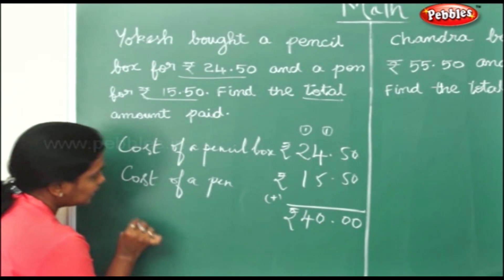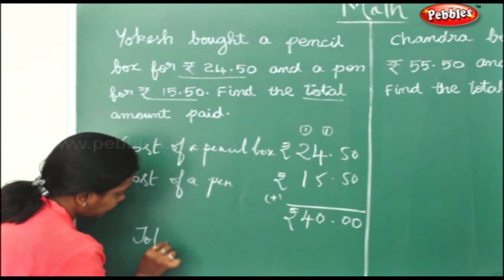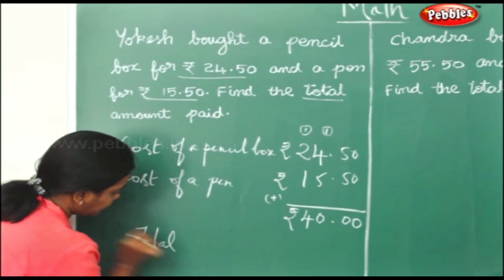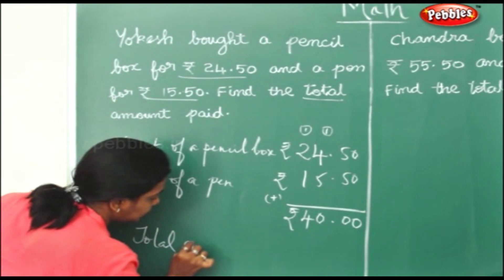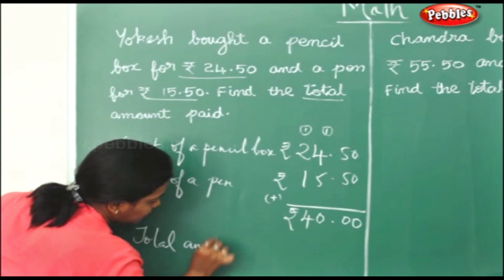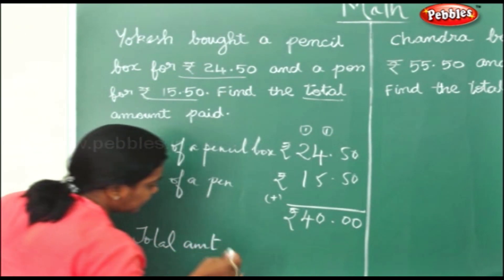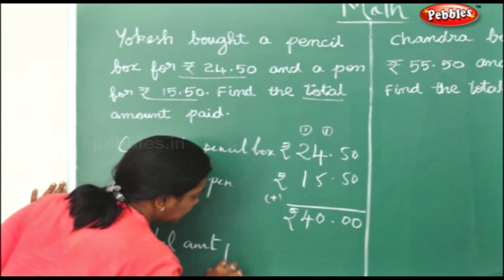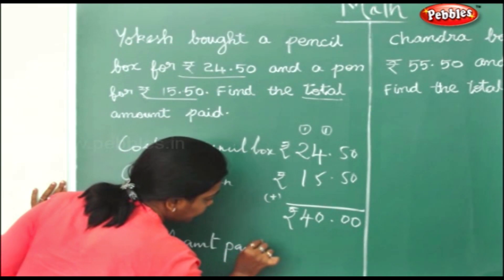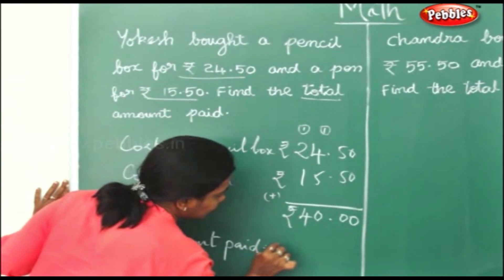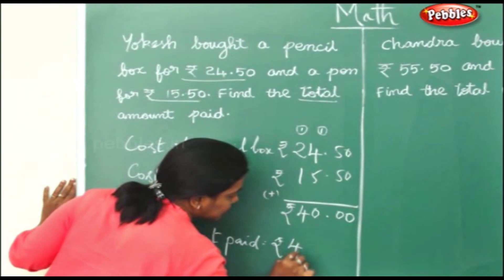So the total amount paid — I am using AMT for amount — paid is equal to rupees 40.